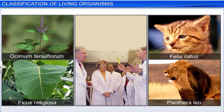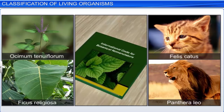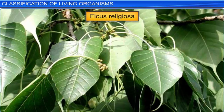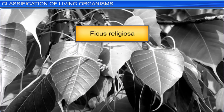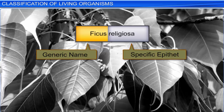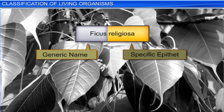Scientific names help avoid ambiguity, as each organism has just one name. For example, the scientific name for the sacred fig, commonly known as the peeple tree in India, is Ficus religiosa. The scientific name has two components: the generic name and the specific epithet. Ficus represents the genus, or the generic name. While religiosa denotes the specific epithet.